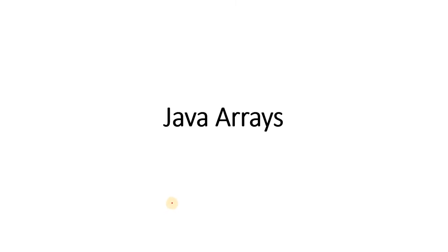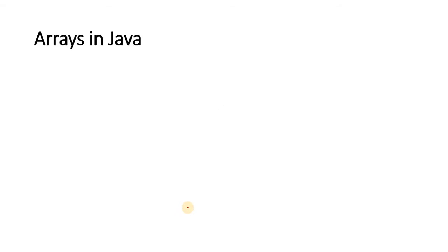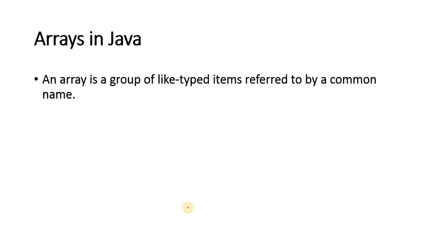Java arrays. Similar to C, Java also contains arrays. Let's see what are the differences between C arrays and Java arrays. Arrays in Java can be defined as a group of same type of items referred by a common name. Basically, an array consists of a group of elements which are of the same data type.